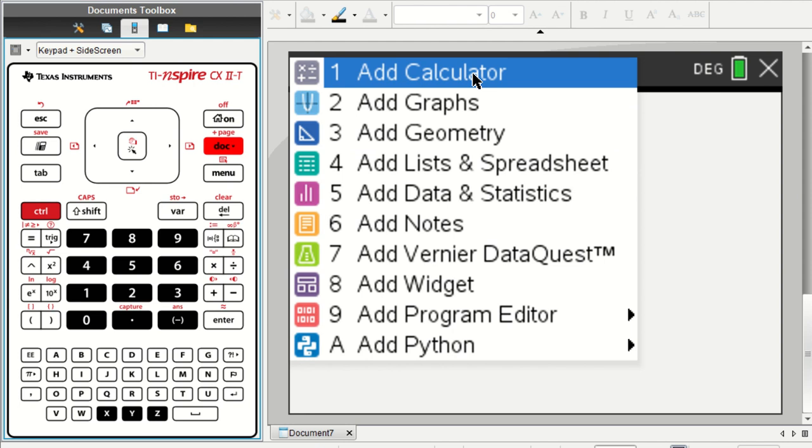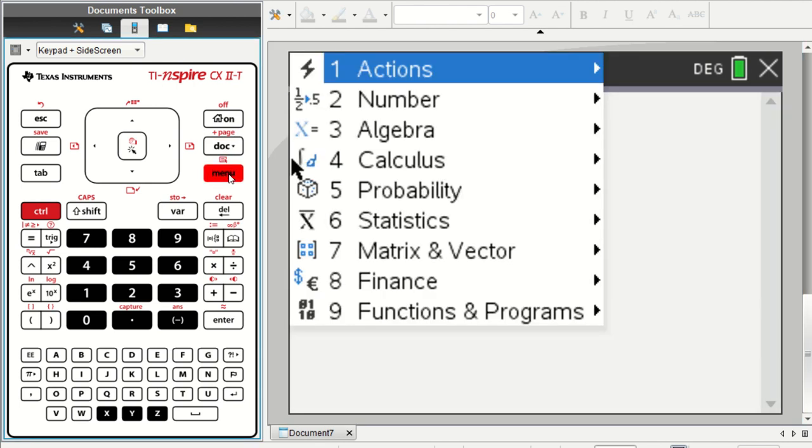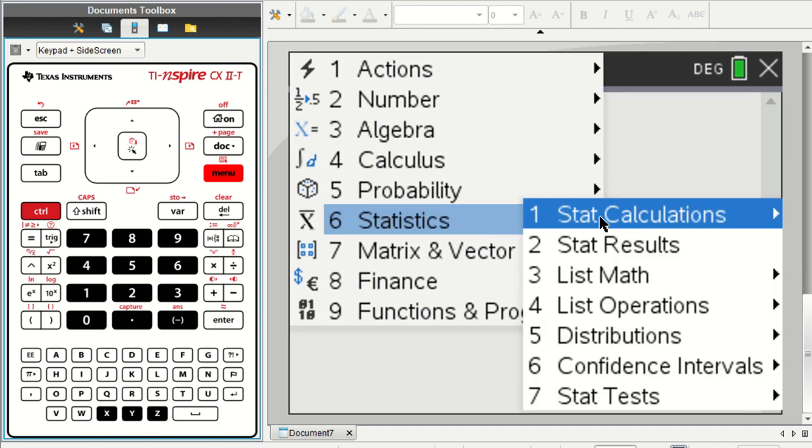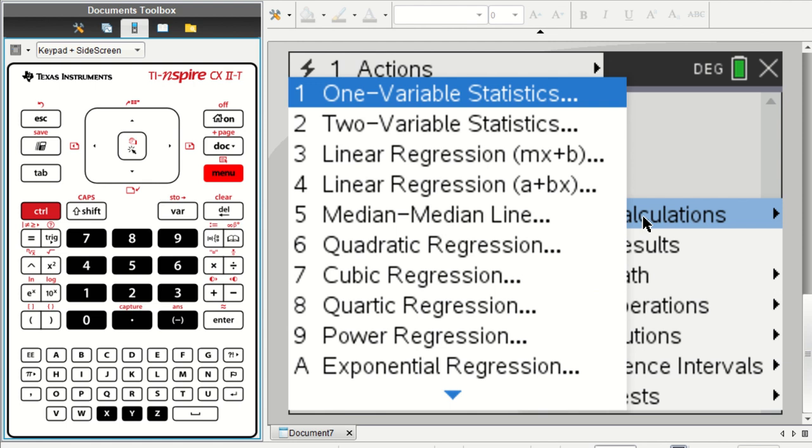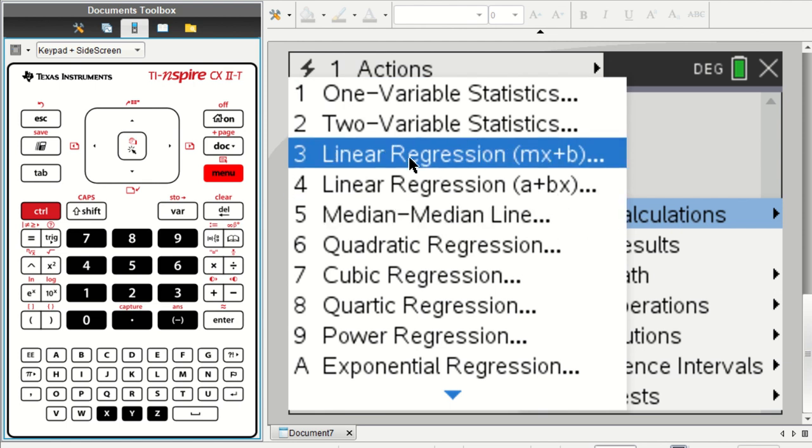But now I just want a calculator page, and I'm going to choose the Menu button and choose the Statistics option, which brings up several things, but in particular, we want Stat Calculations, and we want to do a Regression Calculation. We're going to go with Linear Regression.